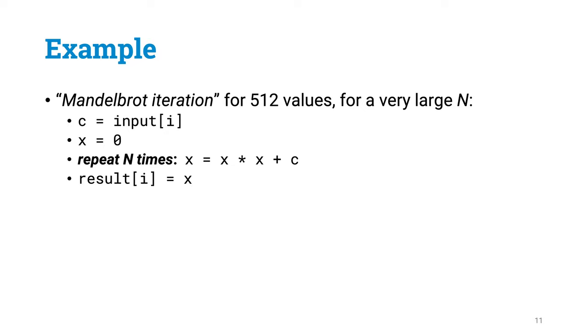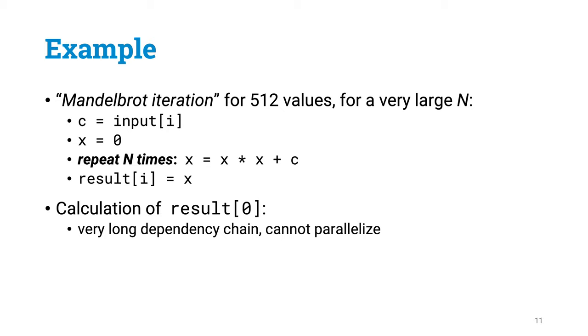And we want to calculate this for some huge value of n. We want to do it for 512 different input values, input 0, input 1, etc. And we want to store the answer into result 0, result 1, etc.